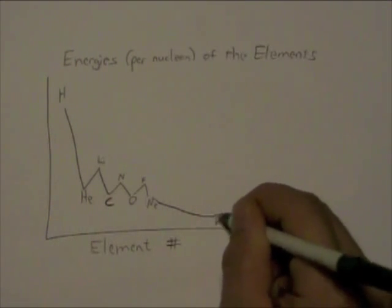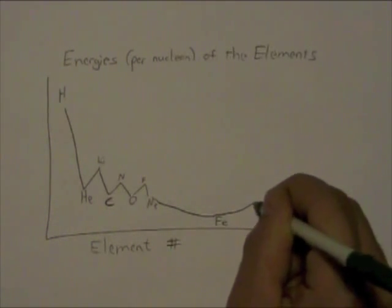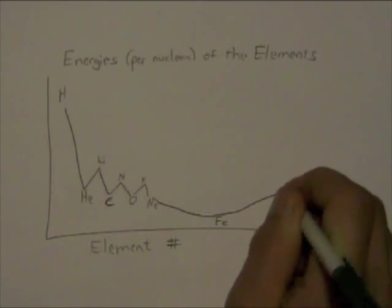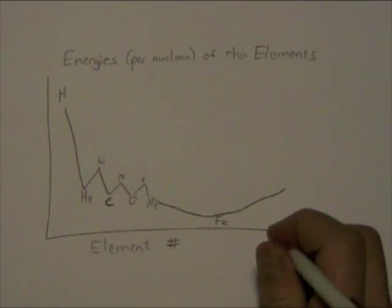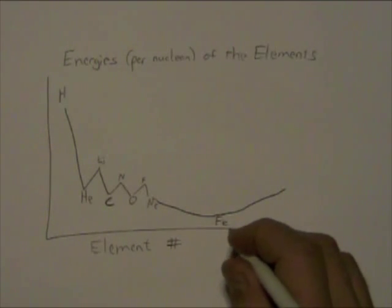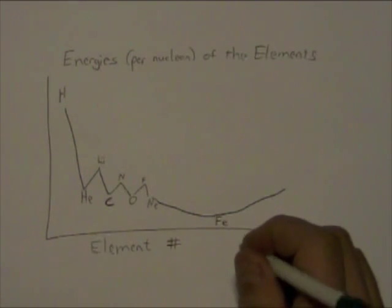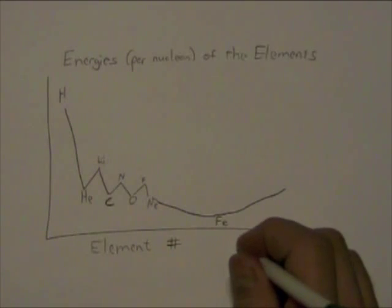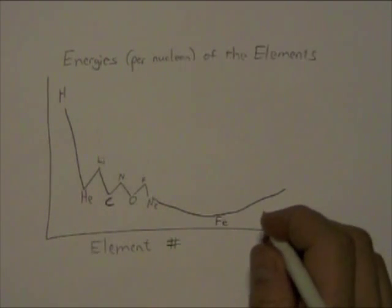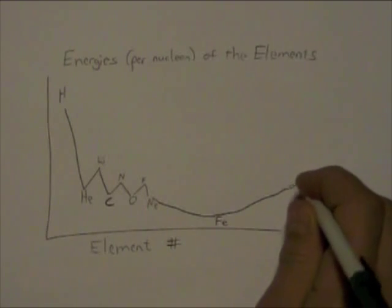And then more massive elements start requiring an input of energy to make. So, in equilibrium, you would expect stars to just stop at iron. That's the bottom of the hill. But we actually do see elements beyond iron all the way to uranium, right?